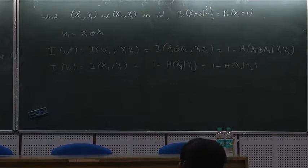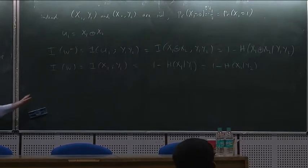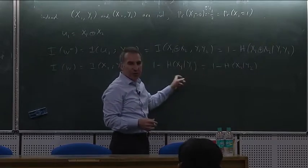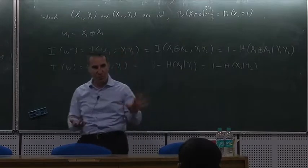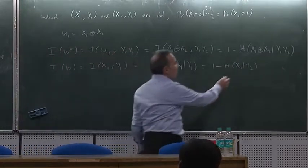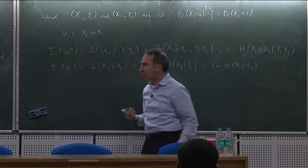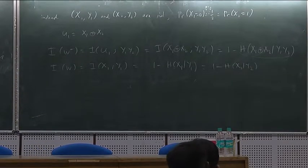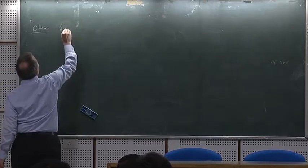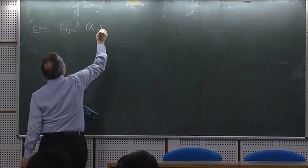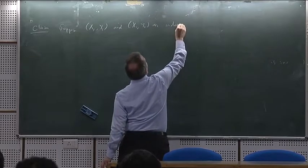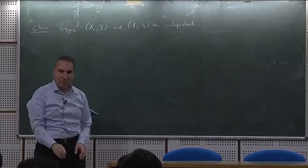So essentially, what we're trying to show is something about I of W being some value — which in this setting means knowing something about H of X1 given Y1 and similarly H of X2 given Y2. Given those values, I want to make a claim about the value of H of X1 plus X2 given Y1, Y2, which is essentially the same as I of W minus.